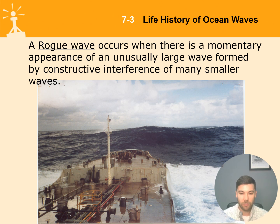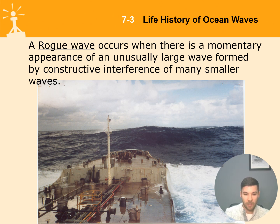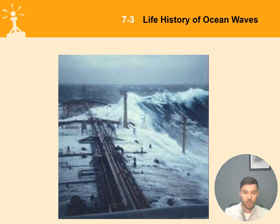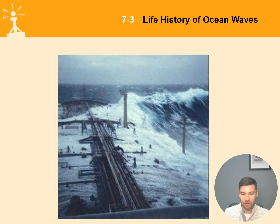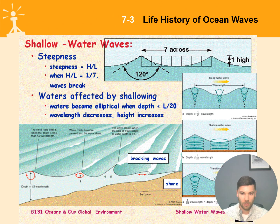Constructive interference can create freak waves — two or more smaller waves sum up to form one enormous wave. The pictures illustrate this: in general the water surface is more or less flat, but then a huge freak wave appears out of nowhere as a result of constructive interference. These waves are very dangerous because when sailing you expect waves to be more or less the same as the forecast average, but suddenly something twice as big appears, which can be extremely dangerous for people on deck.